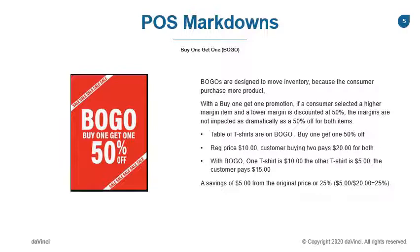When you're doing a BOGO as a buy one, get one 50% off, you're still saving the impact on your margins, as it's only the second item that is 50% off. The consumer believes they're getting a great deal, but as you can see from our example on the slide, they're actually only saving 25%.